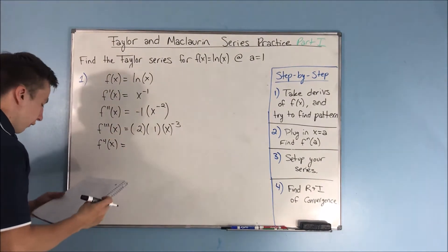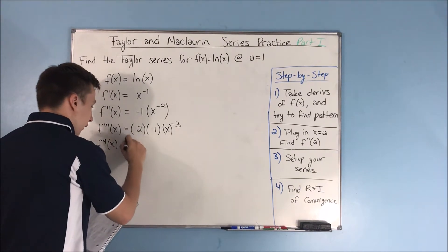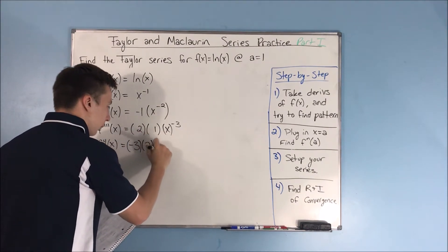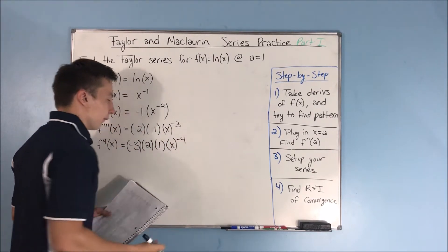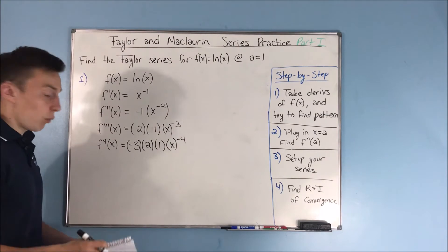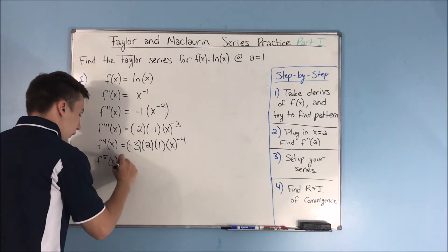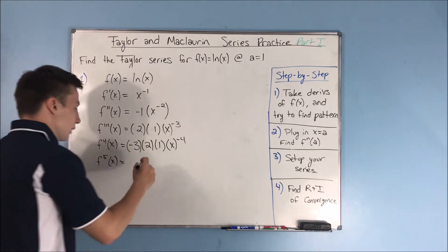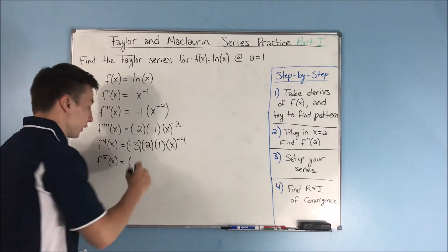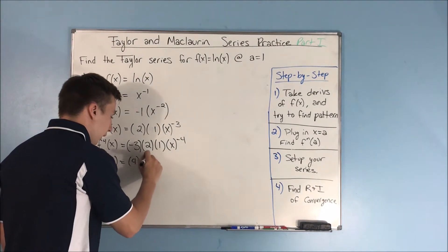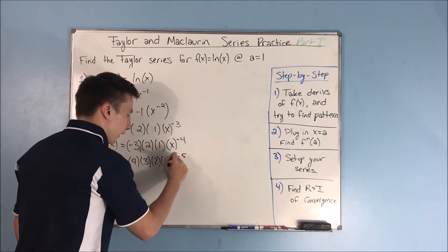For the fourth derivative of x, we're going to end up with negative 3 times 2 times 1 times x to the negative 4. Let's take one more derivative — the fifth derivative. That's going to be 4 times 3 times 1, x to the negative 5.